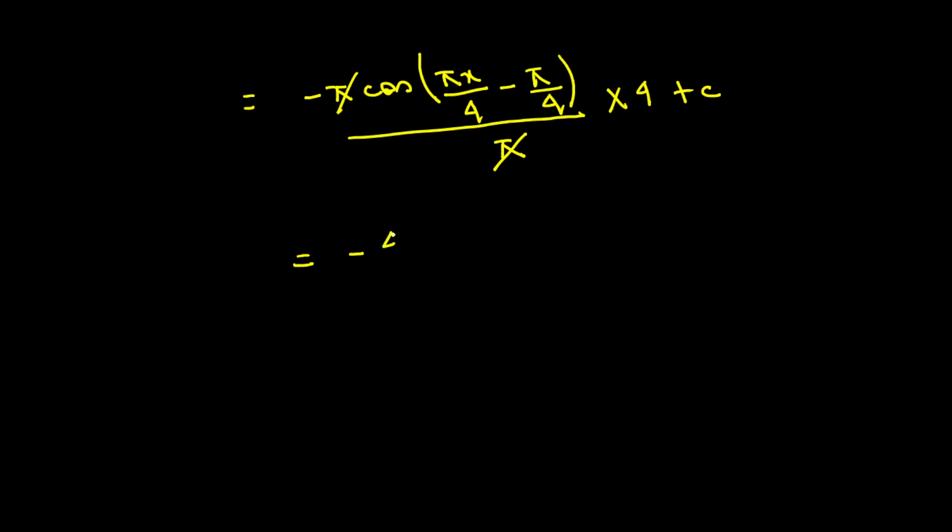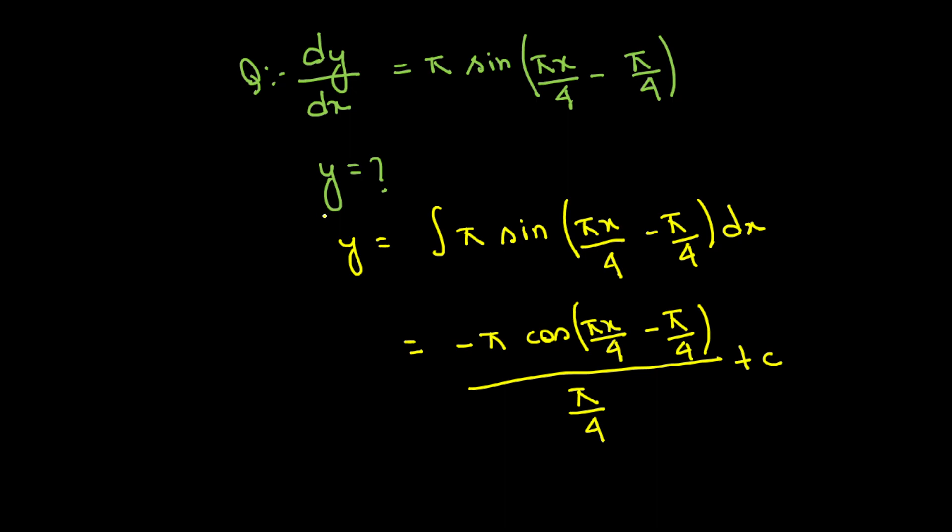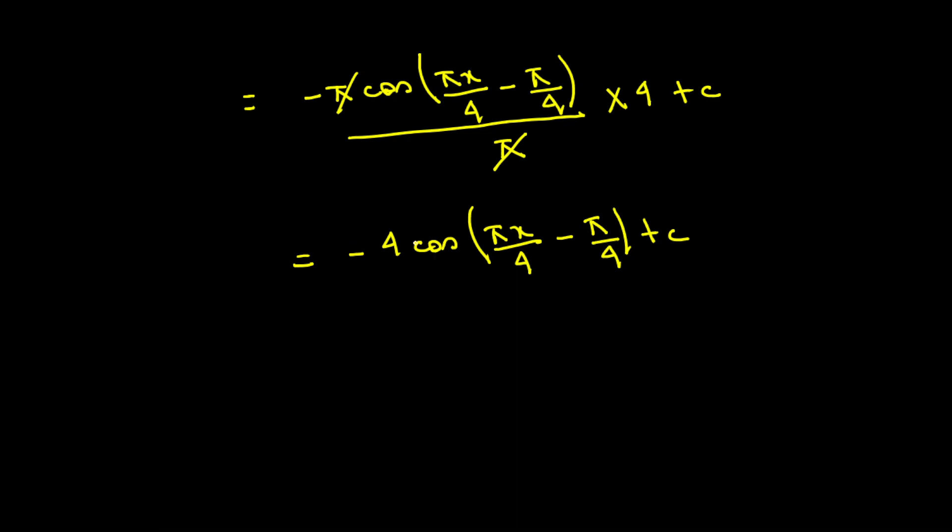Minus 4 cos pi x by 4 minus pi by 4 plus c. Or that, if we integrate pi x by 4 minus pi by 4, we get minus 4 cos pi x by 4 minus pi by 4 plus c.